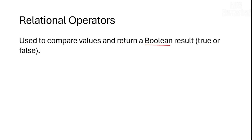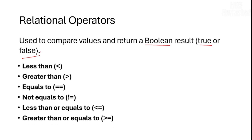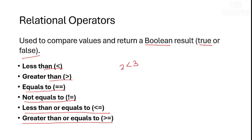Relational operators return a boolean value — true or false. These are the relational operators: less than, greater than, equals to, not equals to, less than or equals to, greater than or equals to. For example, is 2 less than 3? The expression must be in brackets. 2 is less than 3, so it returns true, which is 1.